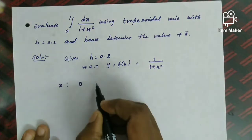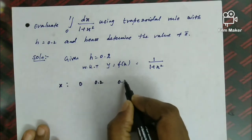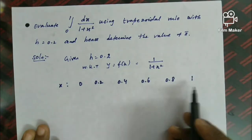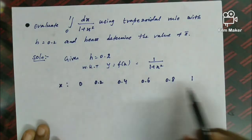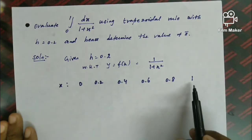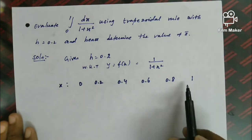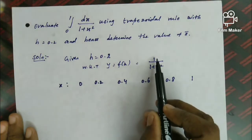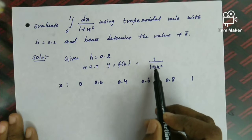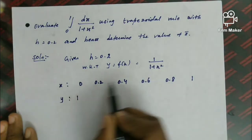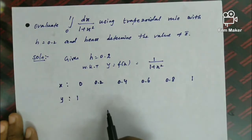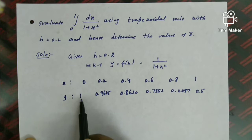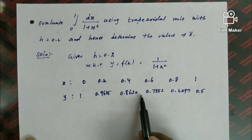For the y-data, we substitute each x value into y = f(x) = 1/(1 + x²). The first x value is 0, giving y₀ = 1/(1+0) = 1. We substitute all x values to get y₀, y₁, y₂, y₃, y₄, y₅ corresponding to x = 0, 0.2, 0.4, 0.6, 0.8, 1.0.